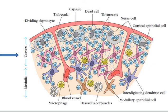Mature thymocytes, which express only CD4 or CD8 and are referred to as single positive, leave the thymus via the blood vessels of the corticomedullary junction. Maturation is finalized in the periphery, where these newly exported cells — called recent thymic immigrants — encounter antigens presented in secondary lymphoid tissues including the spleen and lymph nodes.